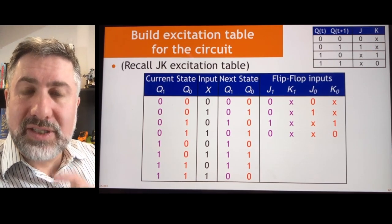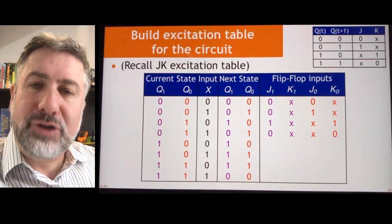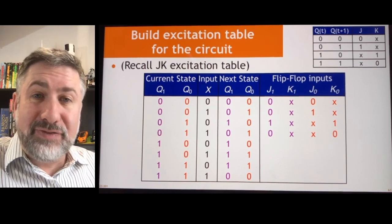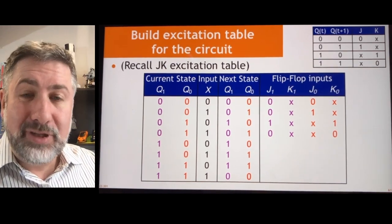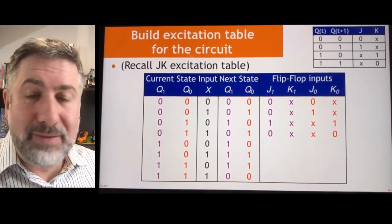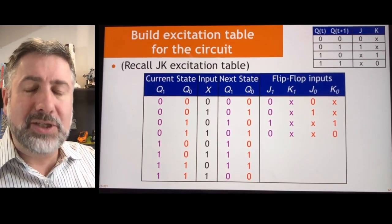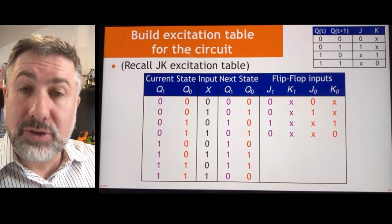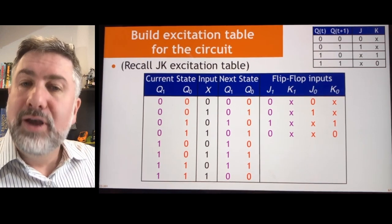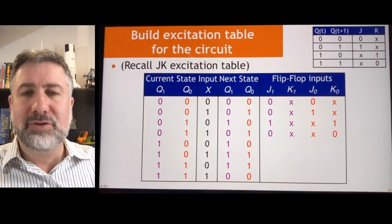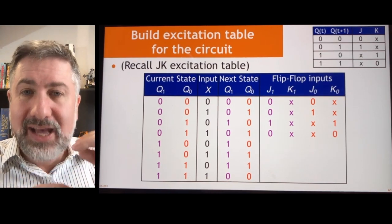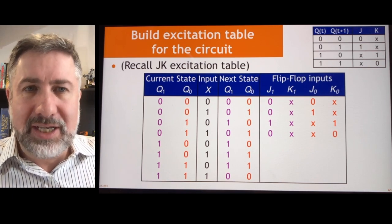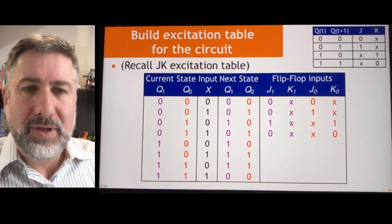This is where the design for a JK flip-flop will differ from the design for a D flip-flop. For a D flip-flop, the excitation table is the same as the characteristic table because you provide as input to the D flip-flop the value you want it to store. For a JK flip-flop, you have to provide inputs to J and K that will cause the transition you're seeking, so the excitation table will be different.